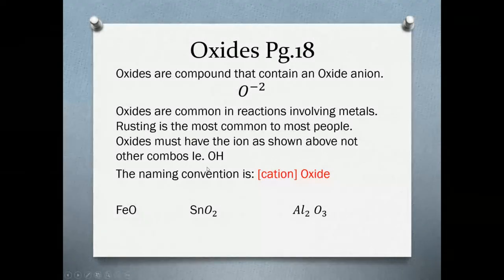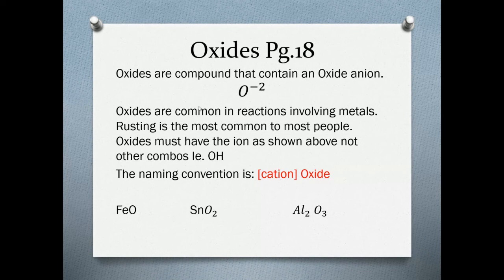Next family category is oxides. One simple qualifier here is that oxides contain an oxide ion, so O negative two. They are common in reactions involving metals. Most common to us is rusting, which is represented as iron oxides. Has to have this one specific ion, not in combination with something.